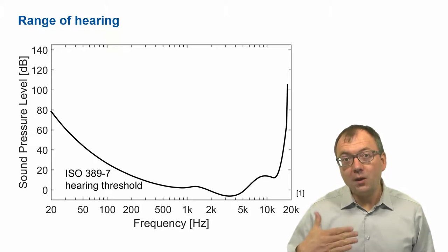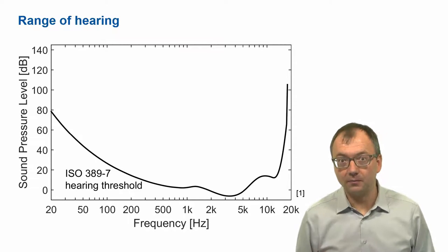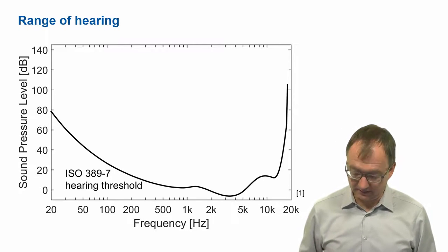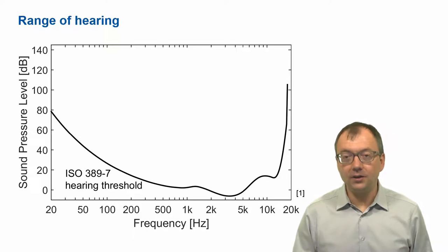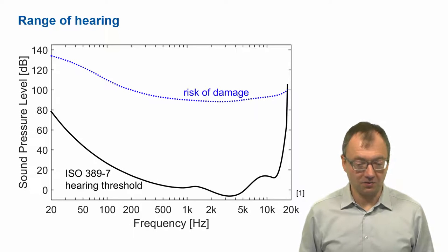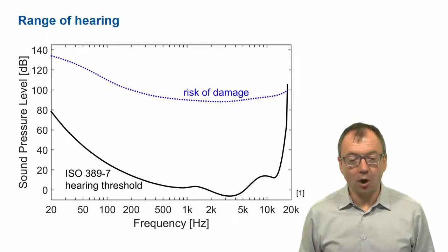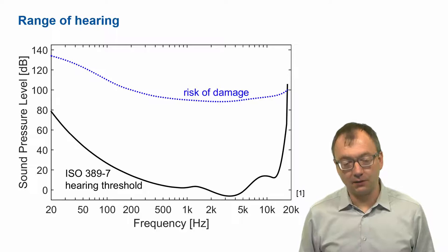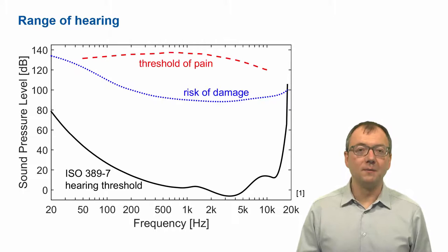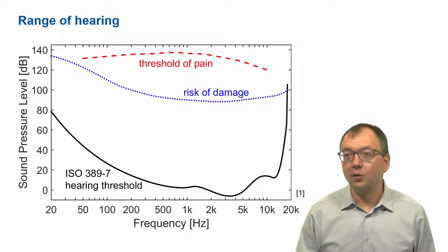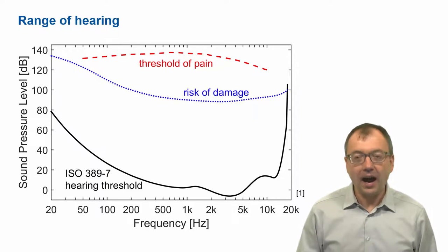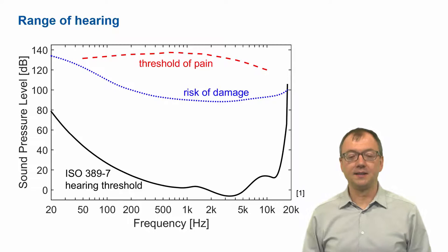Tones beyond that threshold are audible as simple tones. And if we raise the level of those tones, eventually the energy gets so large that we risk damaging the auditory system. Beyond that, the upper limit of what we can hear is the threshold of pain, where tones become so painful that they're not only damaging the ears but actually creating severe pain.